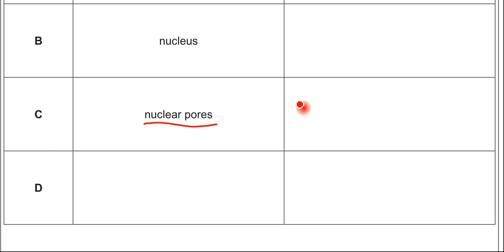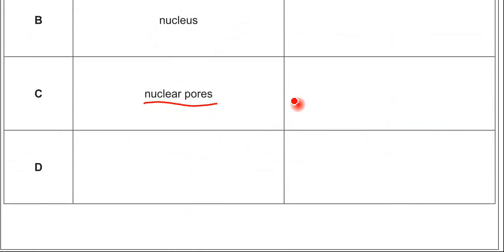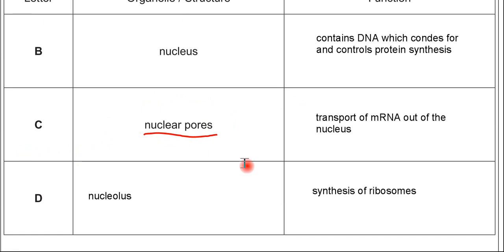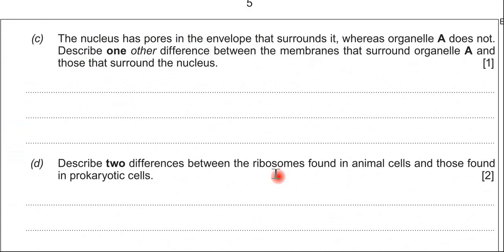D, I've already mentioned that that would be the nucleolus, which is a dark staining region within the nucleus. The function of that would be to produce or to synthesize ribosomes. So, I've typed in the answer there for the table. If we move on to the next part of the question, it's saying that the nucleus has pores in the envelope that surround it, whereas organelle A does not. Describe one other difference between the membranes that surround organelle A and those that surround the nucleus.